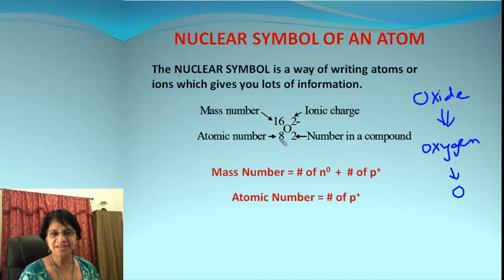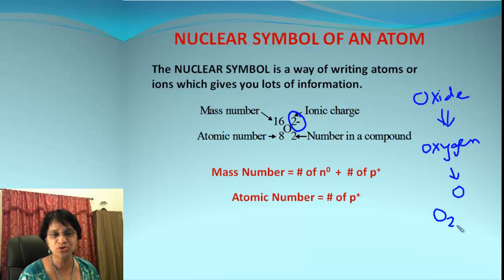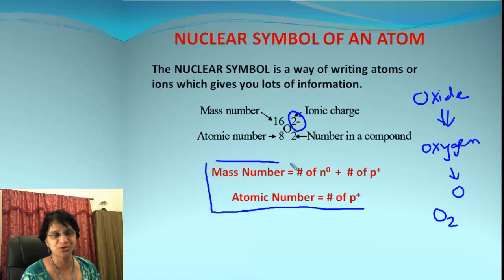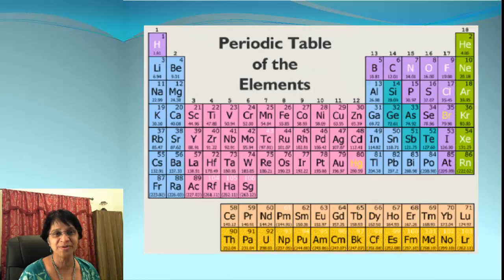Then there are two different numbers: 16 and 8. How did we get these numbers? 16 is the atomic mass number and 8 is the atomic number. We also need the ionic charge, which we always put on the right-hand side top corner. Remember these two equations: mass number equals number of neutrons plus number of protons, and atomic number gives you directly the number of protons. The periodic table gives you the symbols and atomic numbers.